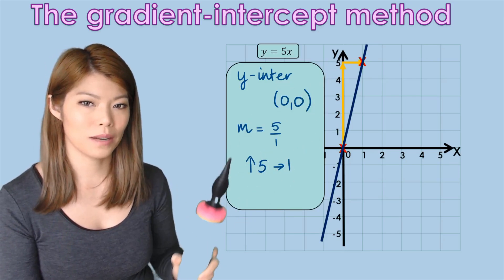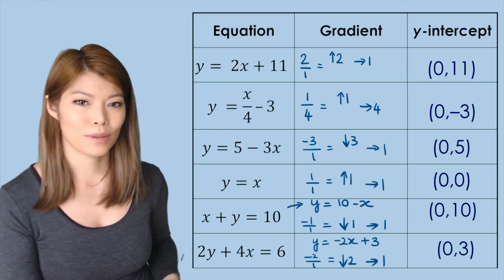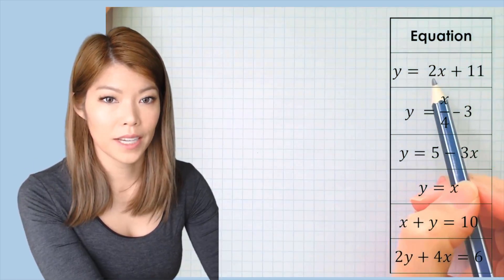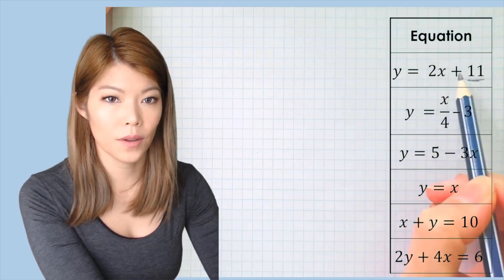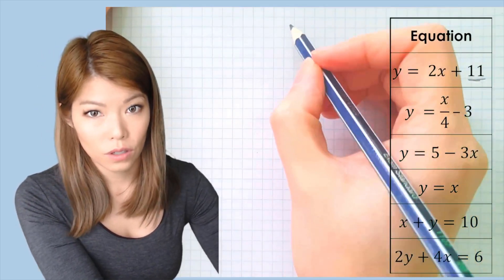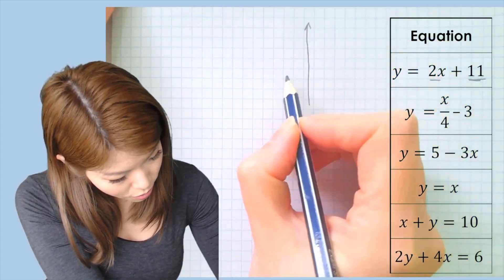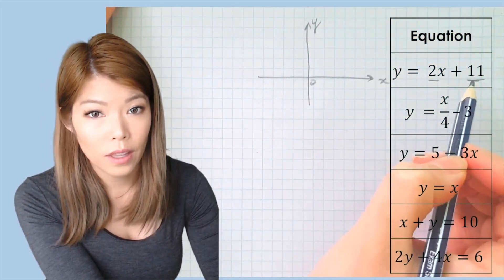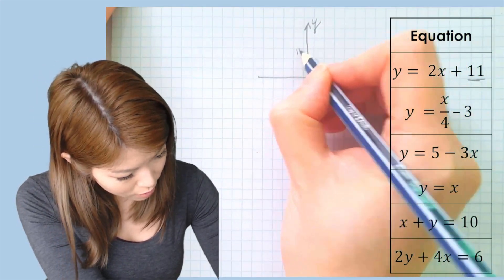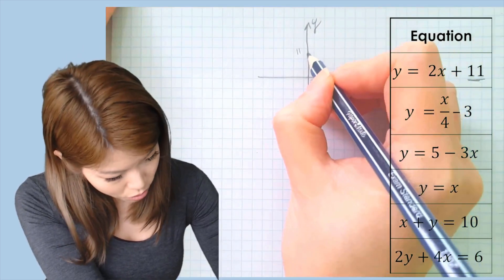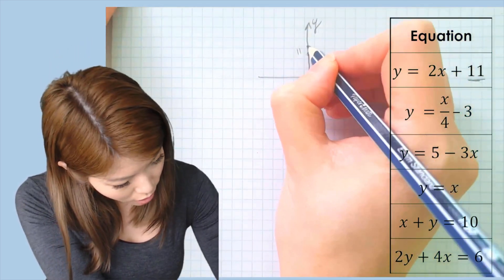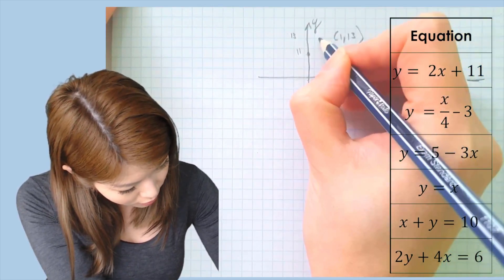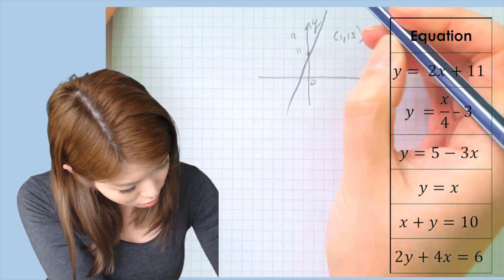Now let's sketch all the equations using what we've calculated. For the first one, y-intercept is 11 and gradient is 2. Draw the x and y-axes, start at y-intercept 11. Going up 2 across 1 gives us the point (1, 13). Sketch the line first, then put the dot.